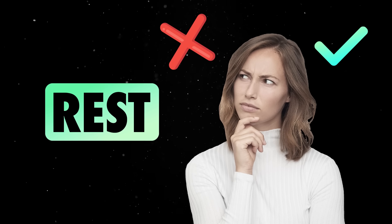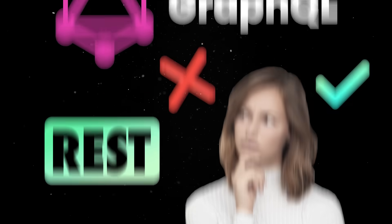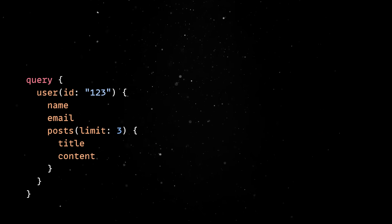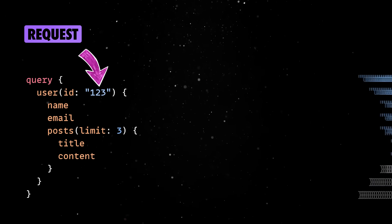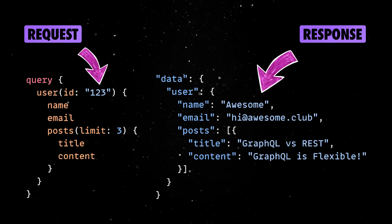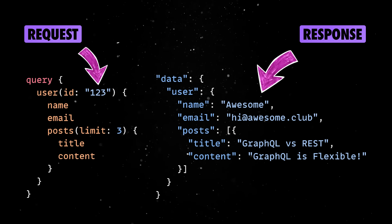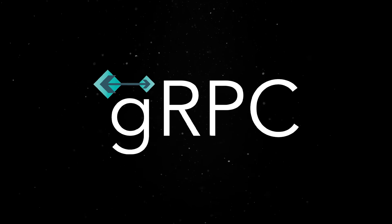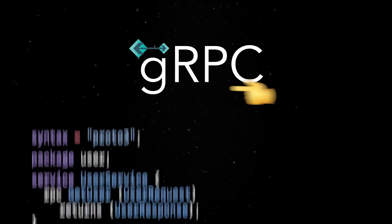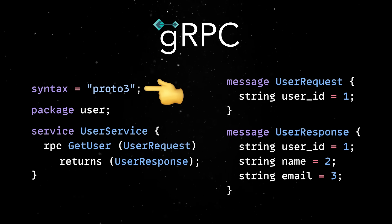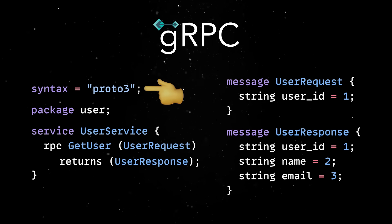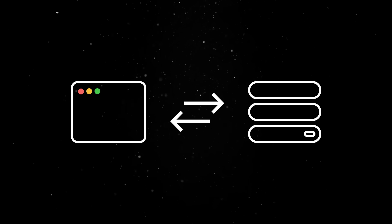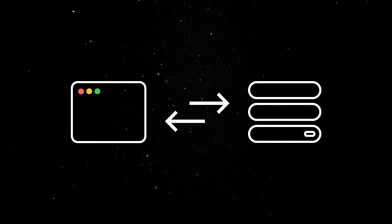Unlike REST, which returns fixed data structures, GraphQL lets clients specify exactly what data they need in a single request. This prevents transferring unnecessary data over the wire, making it highly efficient. gRPC, on the other hand, is a high-performance API framework that uses protocol buffers instead of JSON for data serialization. It supports bidirectional streaming, making it ideal for real-time communication between microservices.